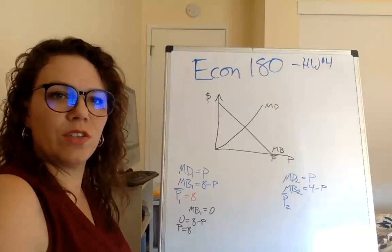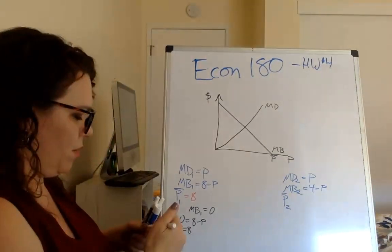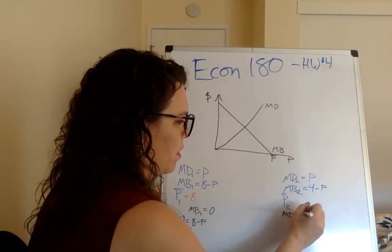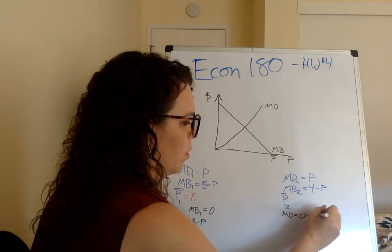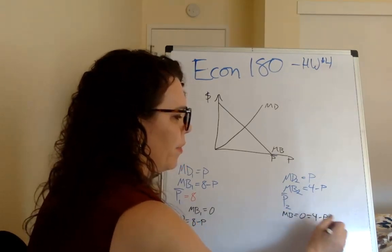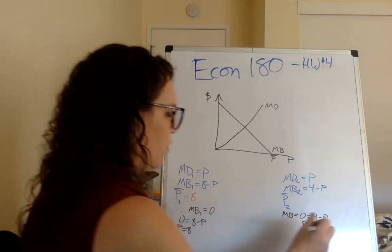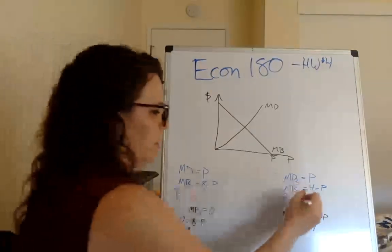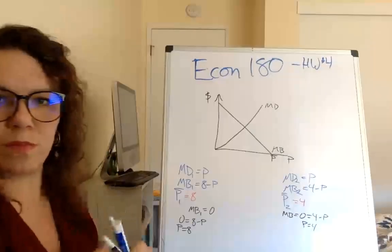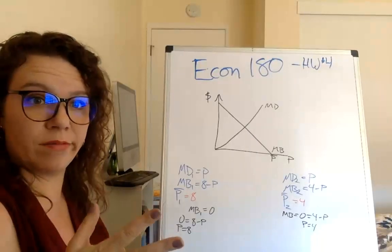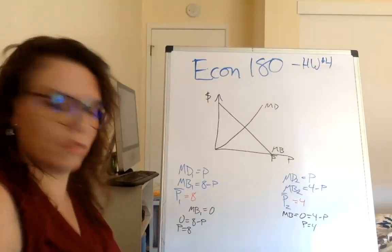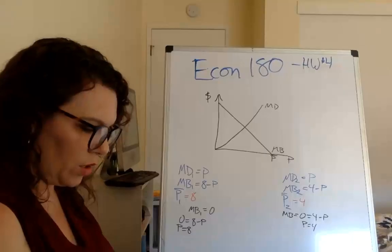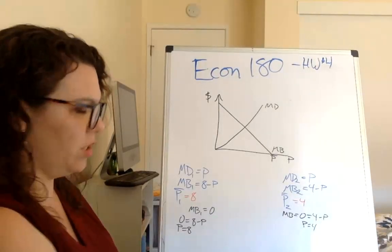Doing the same thing for community 2: P-bar for community 2 is equal to 4.